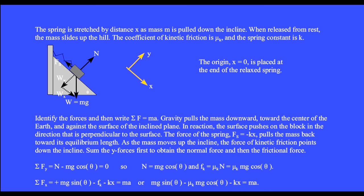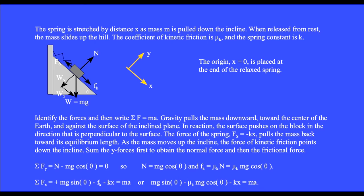The force of the spring, fs equals minus kx, pulls the mass back toward its equilibrium length. As the mass moves up the incline, the force of kinetic friction points down the incline. Sum the y forces first to obtain the normal force and then the frictional force.